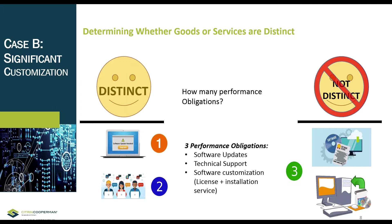In Case B, we have identified three performance obligations: one, software customization — comprising the license and the customized installation service combined; two, software updates; and three, technical support. The company determines whether each performance obligation is satisfied at a point in time or over time. In this case, they are determined to be satisfied over time. The company considers that the customized software is functional intellectual property and that its functionality will not change during the license period as a result of activities that do not transfer a good or service to the customer. Therefore, the company is providing a right to use the customized software, and the software customization performance obligation is satisfied upon completion of the installation service.